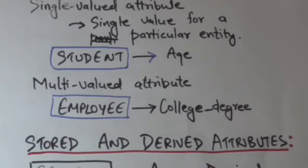Now consider an employee entity set with college degree attribute. An employee may have 0, 1, or several college degrees. Different employees can have different numbers of values for the college degree attribute. Such type of attributes are called multivalued.